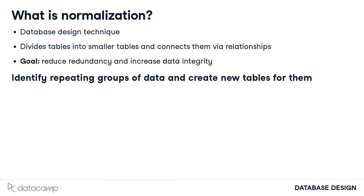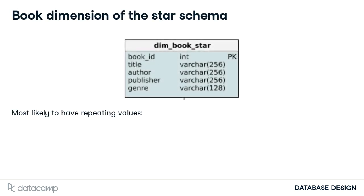Let's go back to our example to see how these tables were normalized. Here's the book dimension in the star schema. What could be repeating here? Primary keys are inherently unique. For book titles, although there is possibly a repeat, it is not as common. On the other hand, authors often publish more than one book, publishers definitely publish many books, and a lot of books share genres. We can create new tables for them, and it results in the following snowflake schema.